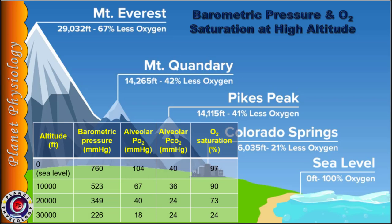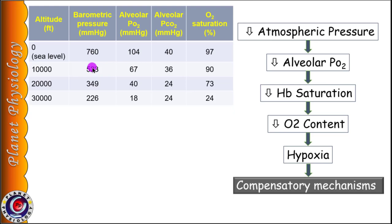At sea level, barometric pressure is 760 mmHg and it decreases with increase in altitude. At sea level, normal alveolar partial pressure of oxygen is 104 mmHg and oxygen saturation in the arterial blood is 97%.